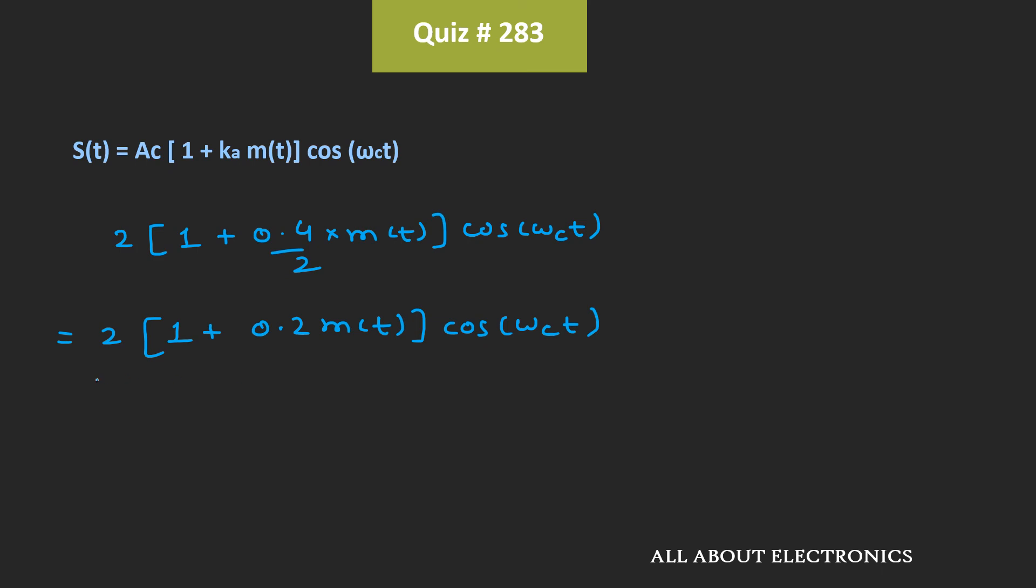That means here, the amplitude of the carrier signal is equal to 2V. And we have been given that the maximum amplitude of the message signal is equal to 2V. So in this case, modulation index μ can be given as Ka times the maximum amplitude of this message signal.